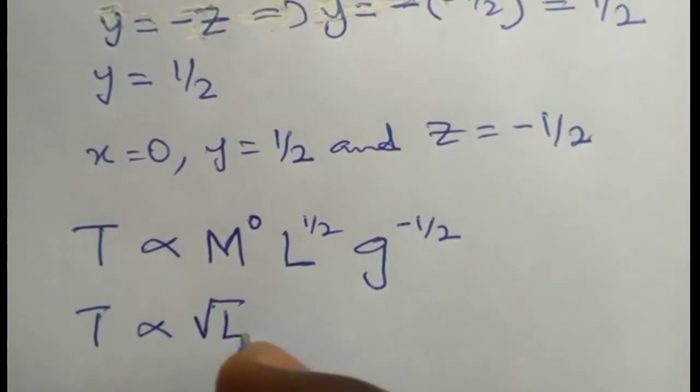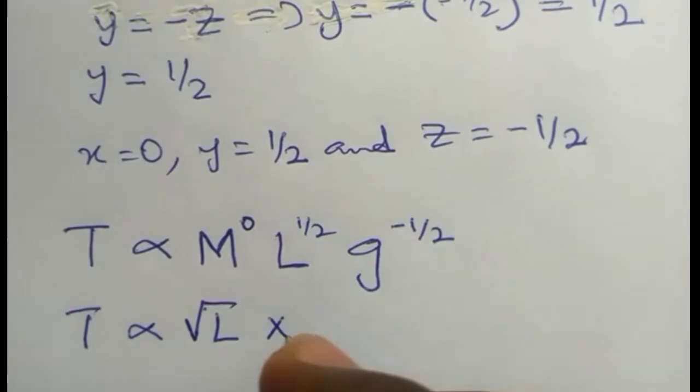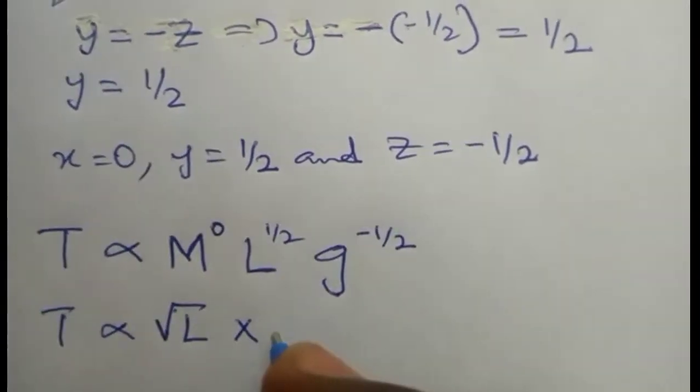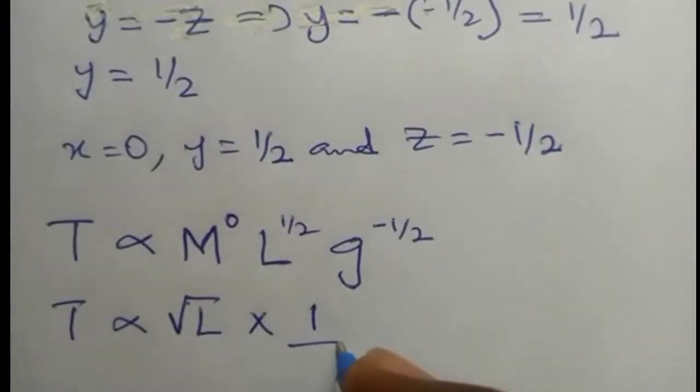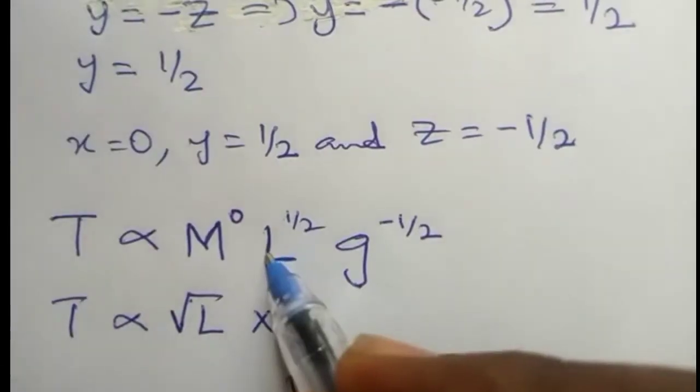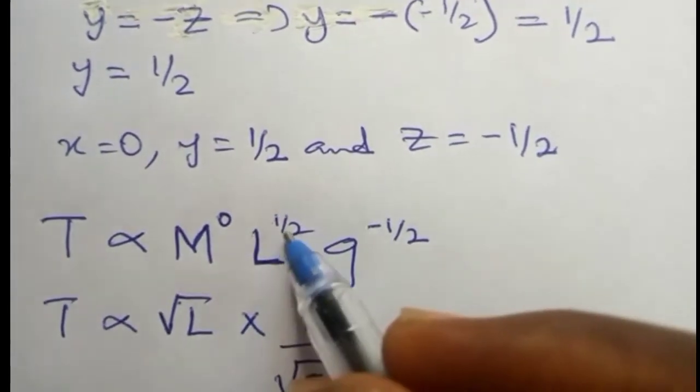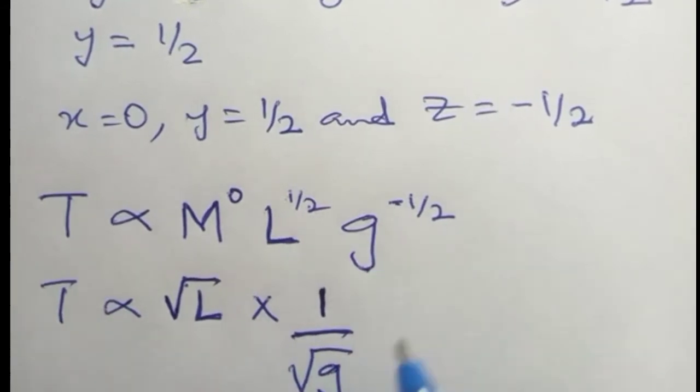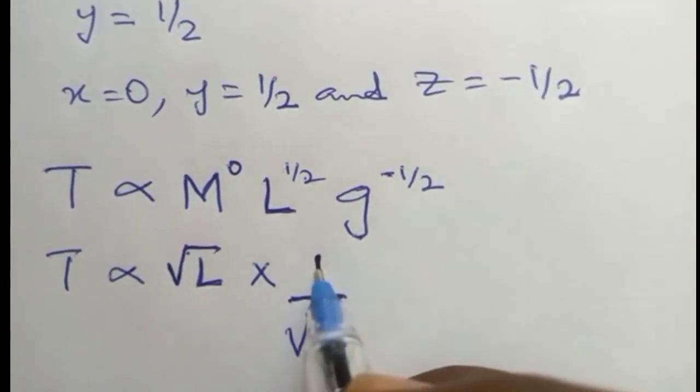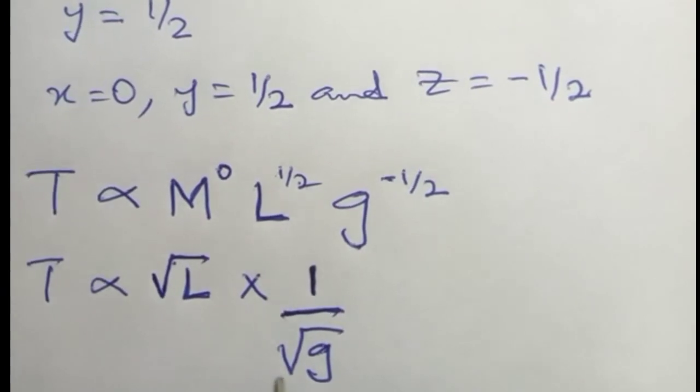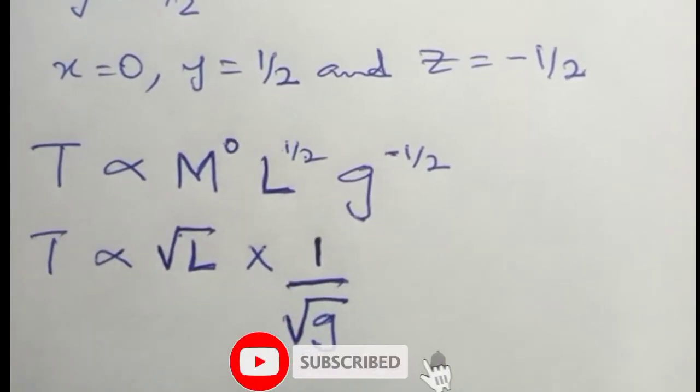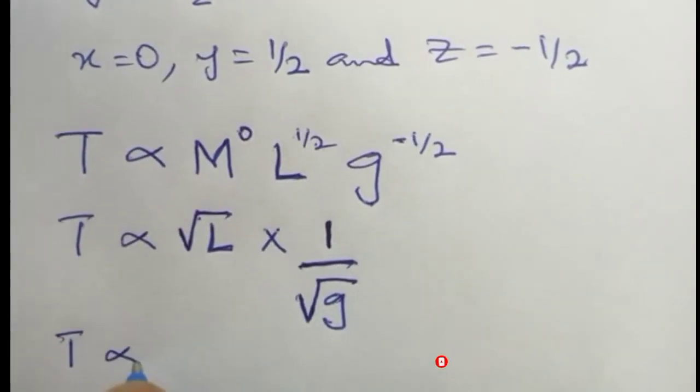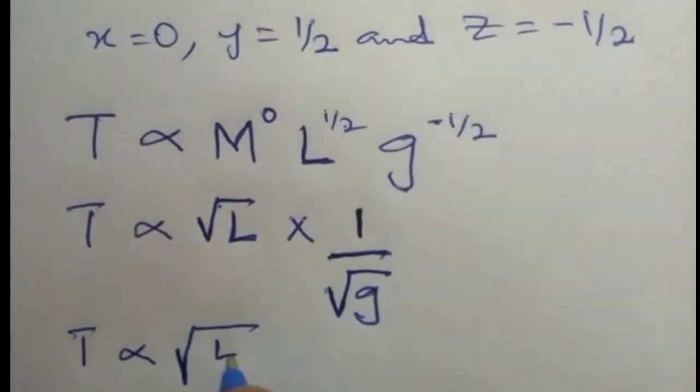According to the law of indices, L raised to 1 over 2 means square root of L, so we have times g raised to minus 1 over 2, which gives us 1 over square root of g. Any variable or number raised to 1 over 2 means a square root. When we have a negative 1 over 2, it means we have to introduce 1 over that root.